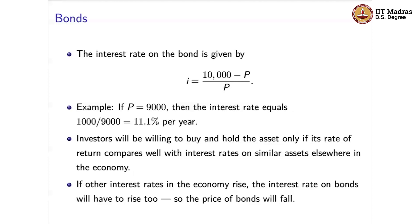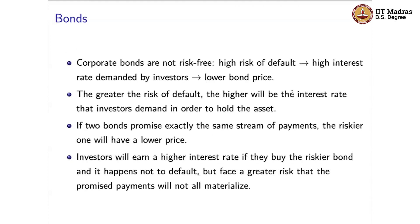Suppose we have found assets very similar to this bond also offering some interest rate. One obvious finding is that if other interest rates in the economy are rising, the interest rate on bonds will have to rise too — because if that is not the case, you would not want to hold these bonds and would prefer other assets. And here we can see that rising interest rates is the same thing as saying that the price of bonds must fall; otherwise, these bonds are no longer attractive. That's already something interesting.